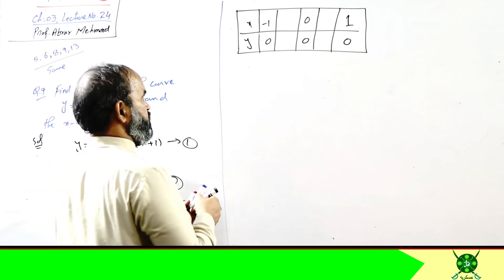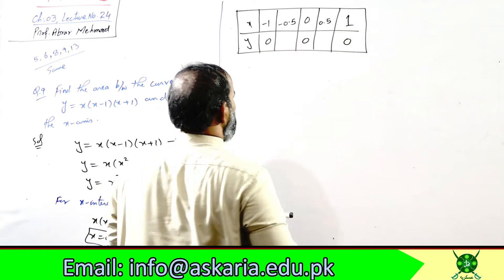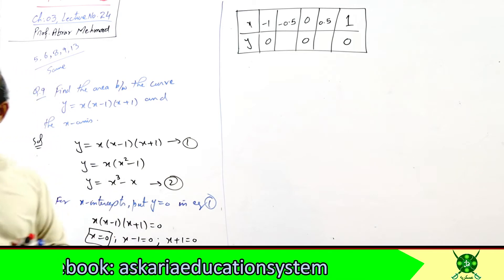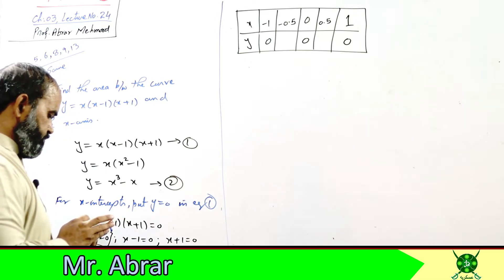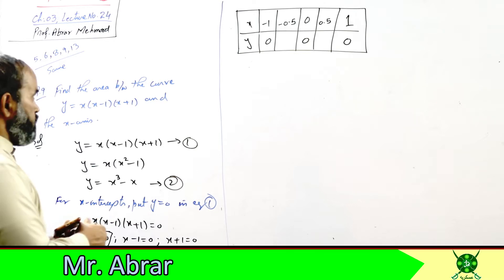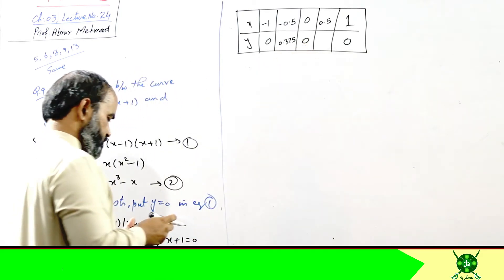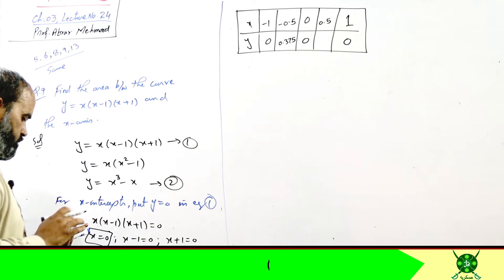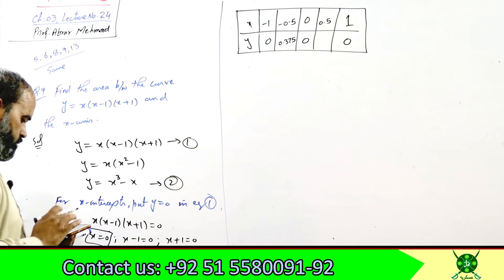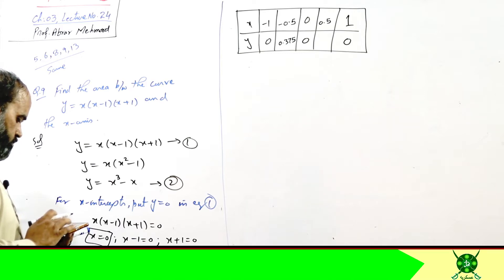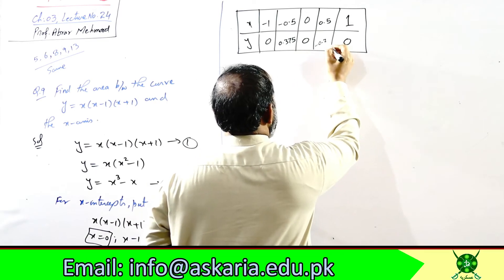Now, to determine the behavior between these zeros, we plug in intermediate values. Using x = −0.5 (between −1 and 0), the result comes out to +0.375.